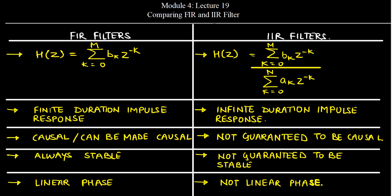The FIR filter has a finite duration impulse response whereas the IIR filter's impulse response is of infinite duration. FIR filters are causal or can be made causal by introduction of a certain amount of delay, converting a non-causal filter to a causal one. This is not the case for IIR filters; rather, causality depends on the transfer function and the values of M and N.